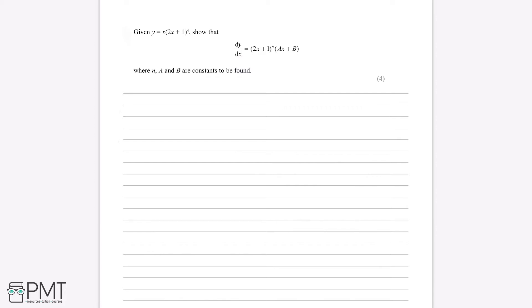First of all, we can see that in the question we have a function, y equals x, multiplied by another function, y equals 2x plus 1 to the power of 4. And if we're differentiating two functions multiplied by each other, we know we need to use the product rule. The product rule states that if y is equal to u multiplied by v, then dy by dx is equal to u multiplied by dv by dx plus v multiplied by du by dx.